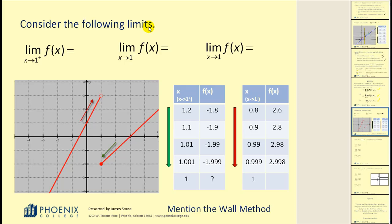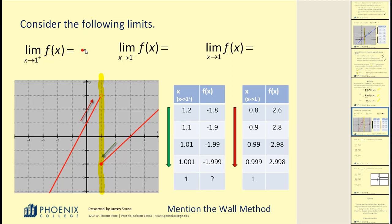Let's take a look at an example. Consider the following limits — two one-sided limits and then the two-sided limit, all approaching positive one. I'm going to sketch a vertical line through x equals one; this is sometimes called the wall method. The limit of f of x as x approaches one from the right side: graphically, that means approaching along the green arrow. We can see the y values look like they're approaching negative two. Looking at the table, as x approaches one from the right side, it does confirm the y values are approaching negative two. Therefore, the limit from the right is equal to negative two.